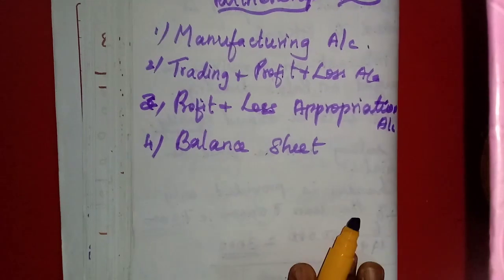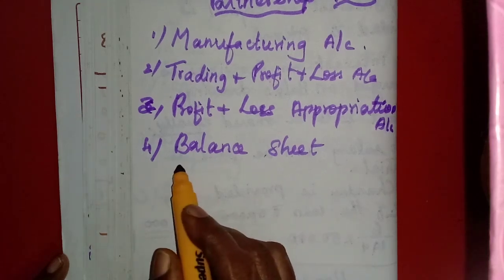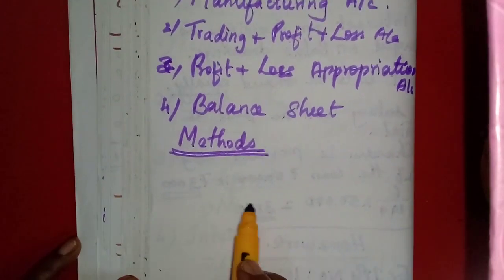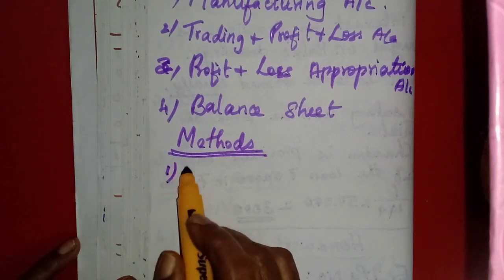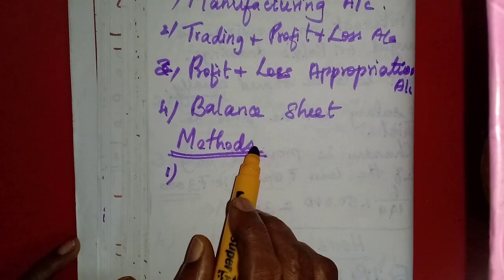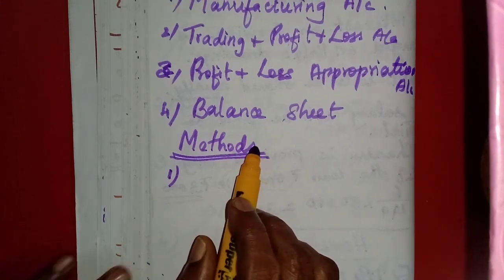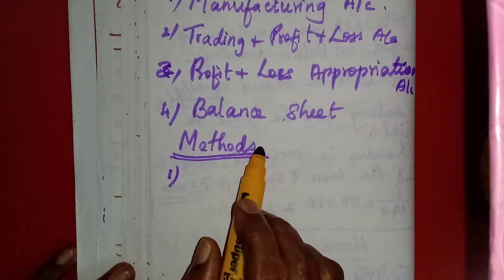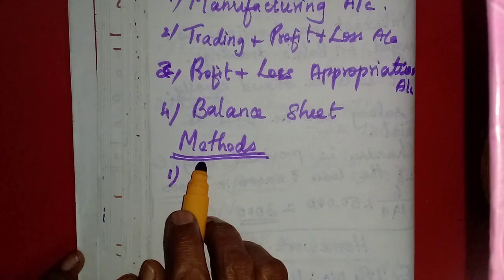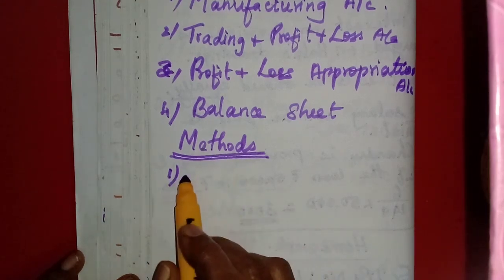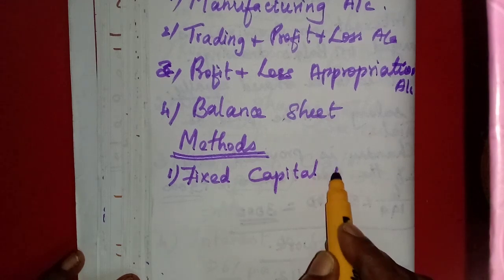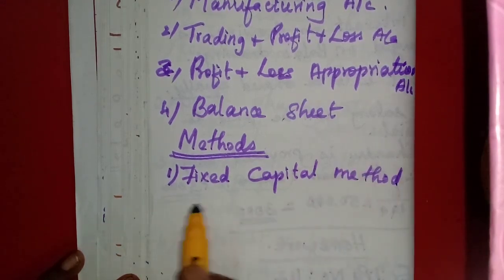Now we will learn the methods of maintaining capital accounts. There are two methods. Capital is the amount invested by each partner in the firm — they may contribute that capital either in cash or in kind, maybe in goods or assets or anything. Each partner's capital account will be maintained separately. One is the fixed capital method and the other one is the fluctuating capital method.